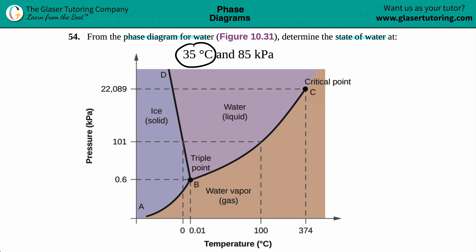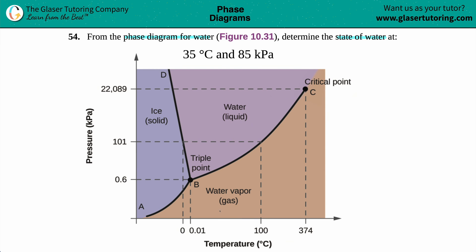Let's look at 35 degrees Celsius. This figure is not really represented to scale — the spacing between 0 to 100 and 100 to 374 is a little off. But we can estimate: if we treat 0 and 100 as a true axis, 50 degrees would be somewhere in the middle, maybe a little this way.